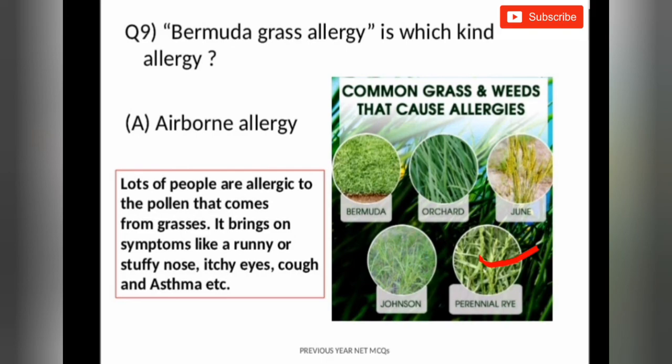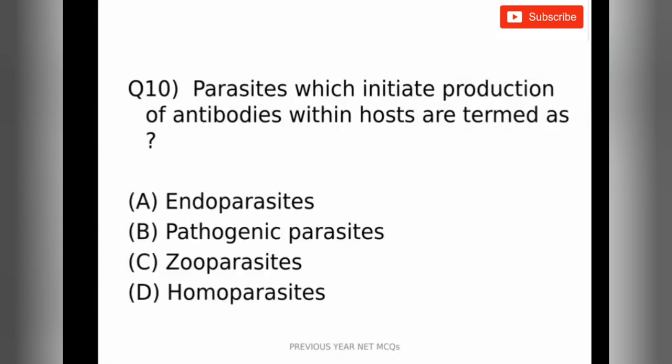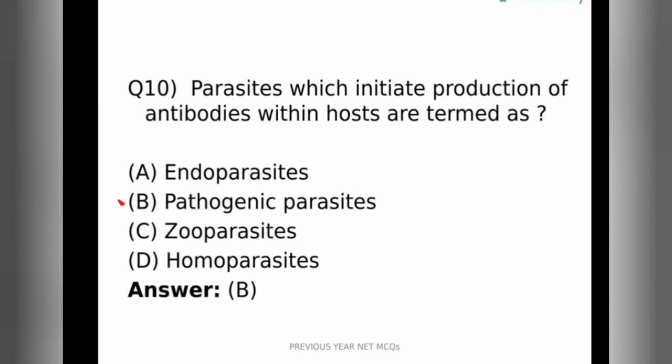So next moving on to the tenth question. Parasites which initiate production of antibodies within the host are termed as which kind of parasites? The correct answer is pathogenic parasites, option B.